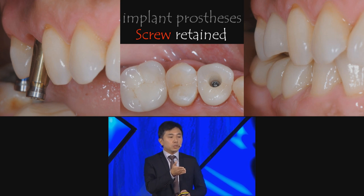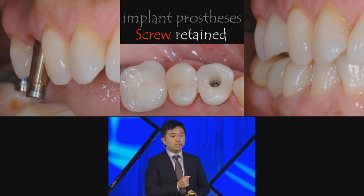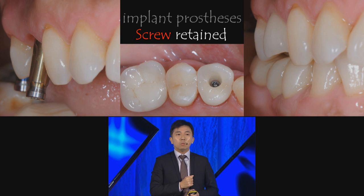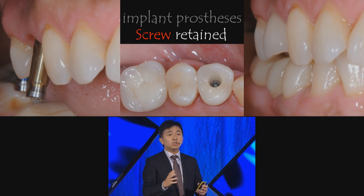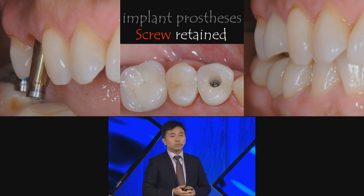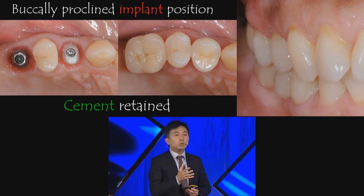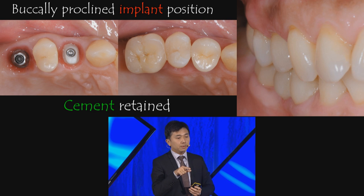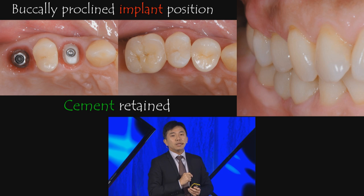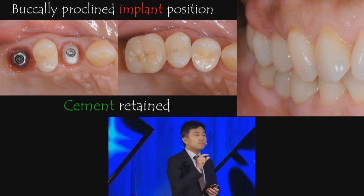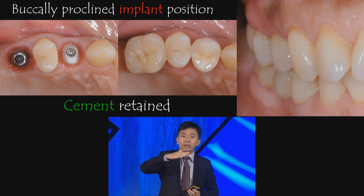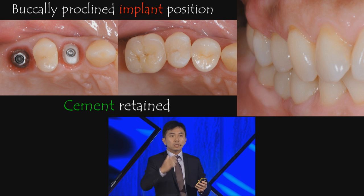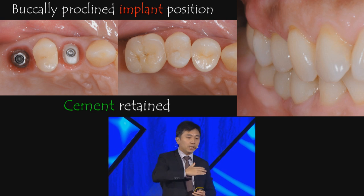For example, a screw-retained prosthesis on a premolar was coming too far outward because they were trying to enclose the access hole. To correct the crown form, we prepped the screw-retained crown, converted it into an abutment, and took an impression to do a final cemented crown. In summary: screw-retained restorations allow us to correct positional problems, while cement restorations allow us to correct angulation problems.